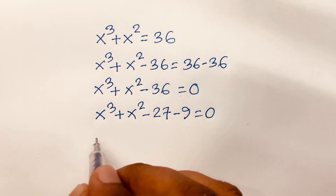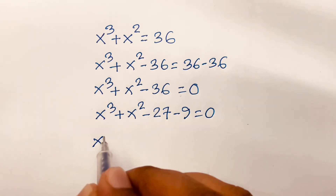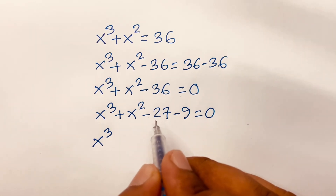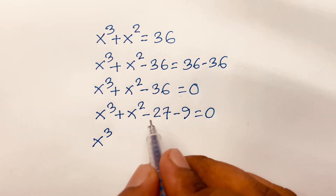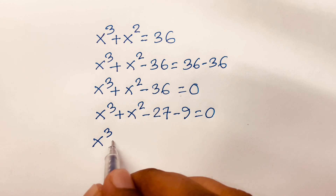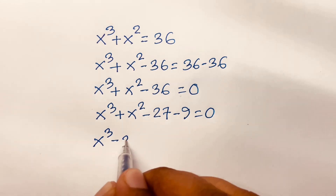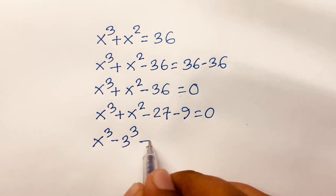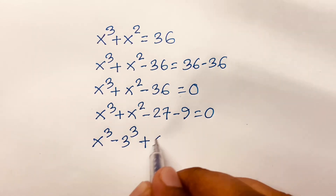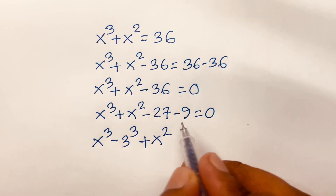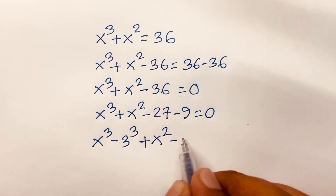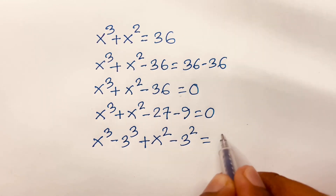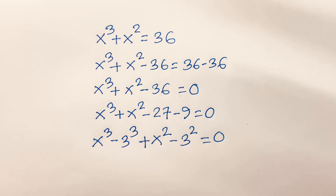Then I can say x to the power 3 minus 27 — that is minus 3 to the power 3 — plus x squared minus 9, which is 3 to the power 2, is equal to 0.